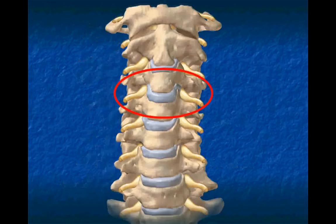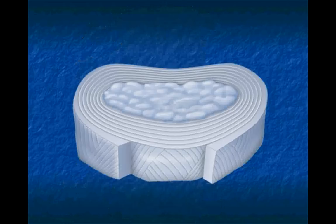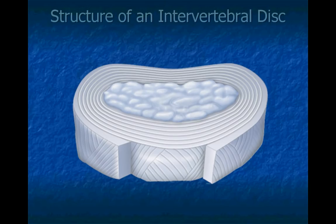Each disc acts as a shock absorber between vertebrae and adds flexibility to the spine. The cumulative effect of the microtraumas or injuries that occur in our lives can cause the fibers of discs to become weak.